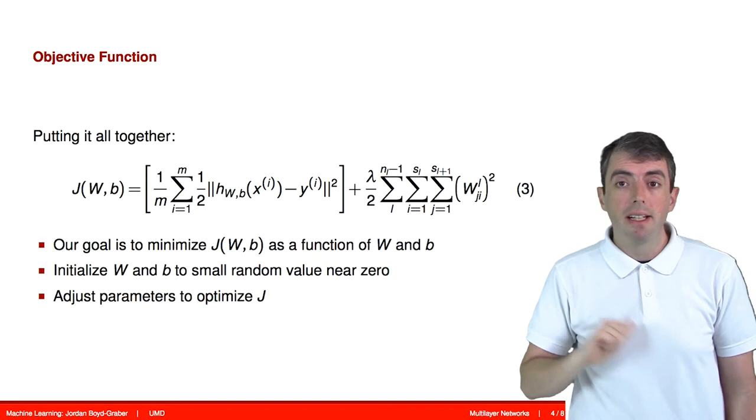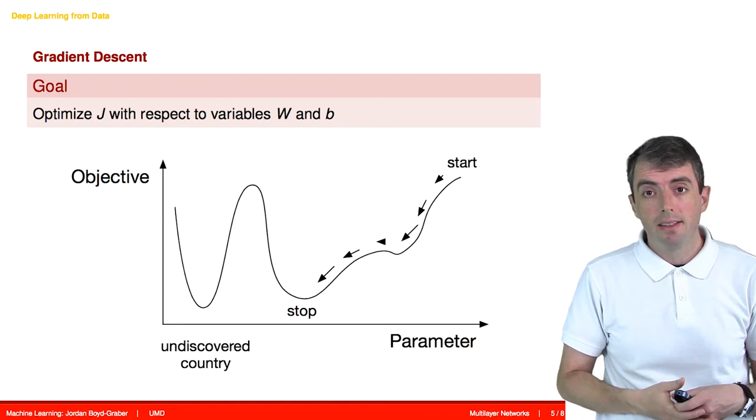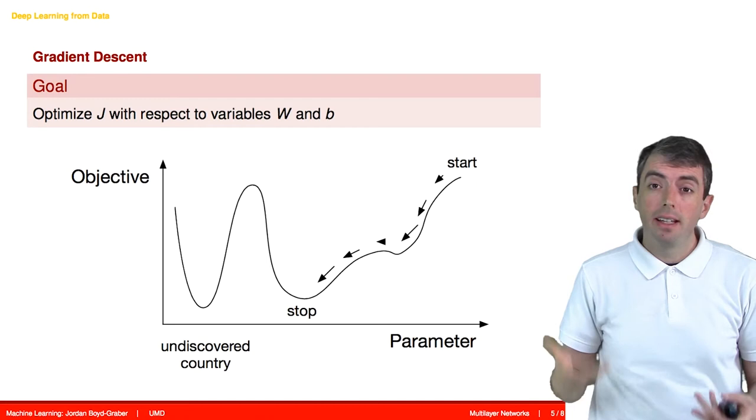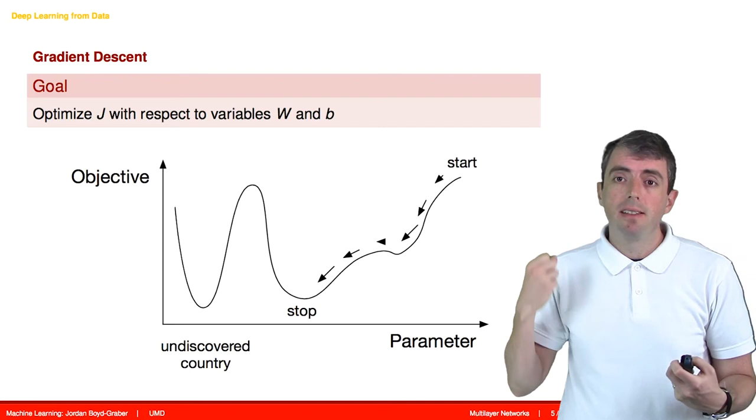Like logistic regression, we'll use stochastic gradient descent to answer this problem, or an algorithm like it. So the way that this works is that you have some initial error, and you're then going to update your w's and your b's to slightly decrease your error.